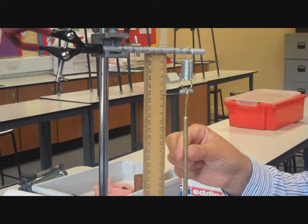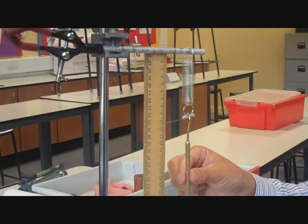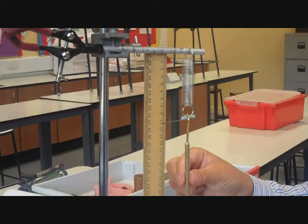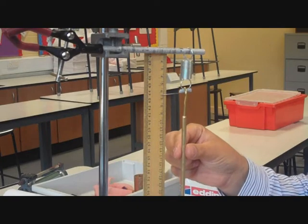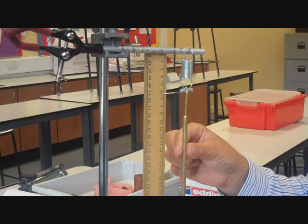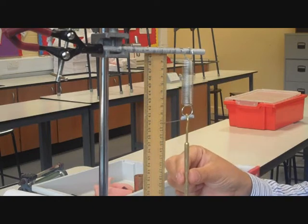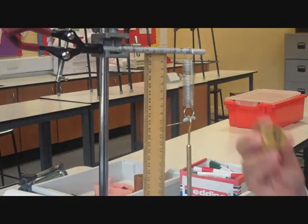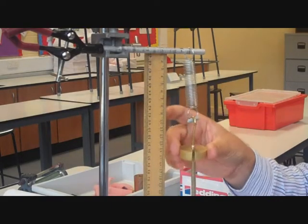Originally we were 6, so this has gone down to 10.2, so we're interested in the extension. The extension of the spring is going to be the difference between 10.2 centimeters and the original length of 6, which would be 4.2 centimeters. So that's what we'll be after, and we'll just continue this so you can see what we're going to be doing.